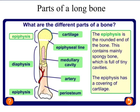Parts of a long bone — this is a structure you need to know about. At the top and bottom is the epiphysis, which is the rounded end of the bone and is where growth takes place. The epiphyseal line is where growth takes place. There is also cartilage at both ends — the end plate — which protects the end of the bone and is also involved in growth, as we'll look at later.